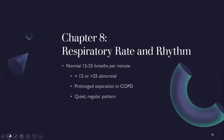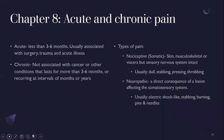Acute pain is less than three to six months in duration, usually associated with surgery, trauma, or illness. Chronic pain lasts more than three to six months or recurs at intervals of months to years, and is not associated with cancer or other conditions. Types of pain: somatic pain — skin, musculoskeletal, or visceral with an intact sensory nervous system — described as dull, stabbing, pressing, or throbbing. Neuropathic pain affects the nervous system and is described as shock-like, stabbing, burning, or pins and needles.